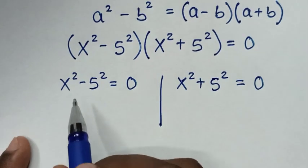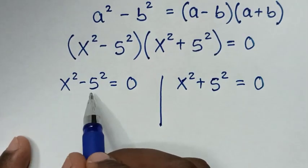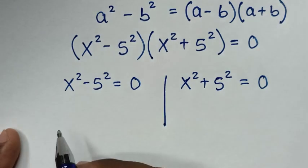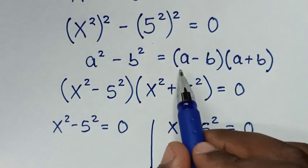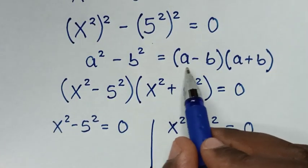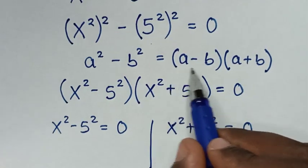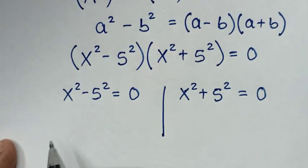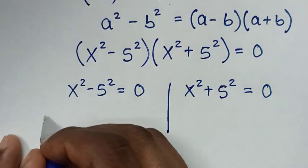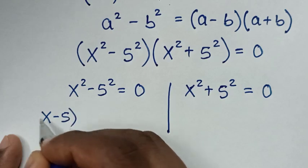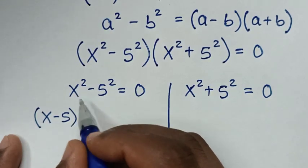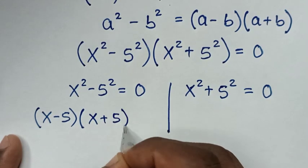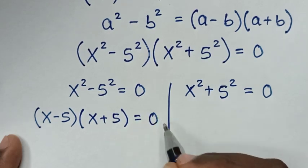The first equation x² minus 25 equals 0 is also in the form of a difference of squares, since we have x² minus 5². Applying the rule again gives us (x minus 5)(x plus 5) equals 0.